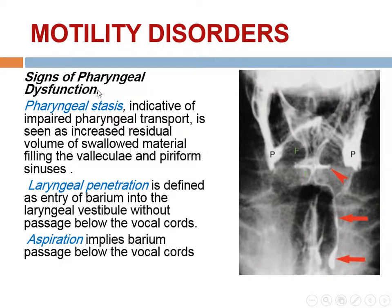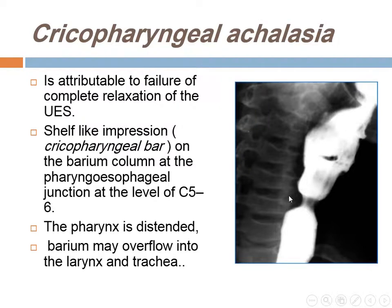Motility disorders: signs of pharyngeal dysfunction include pharyngeal stasis, indicating impaired pharyngeal transport seen as increased residual volume filling the valleculae and pyriform sinuses. Laryngeal penetration is defined as entry of barium into the laryngeal vestibule without passing below the vocal cords. Aspiration implies barium passage below the vocal cords into the trachea. Cricopharyngeal achalasia is a failure of complete relaxation of the upper esophageal sphincter, appearing as a shelf-like impression on the barium column at the pharyngoesophageal junction at the level of C5-C6, with the pharynx distended and barium possibly falling into the larynx and trachea.